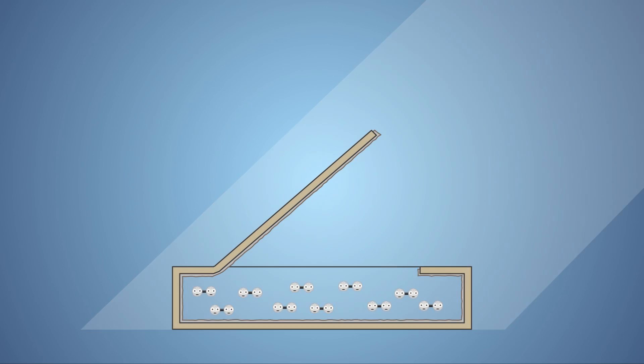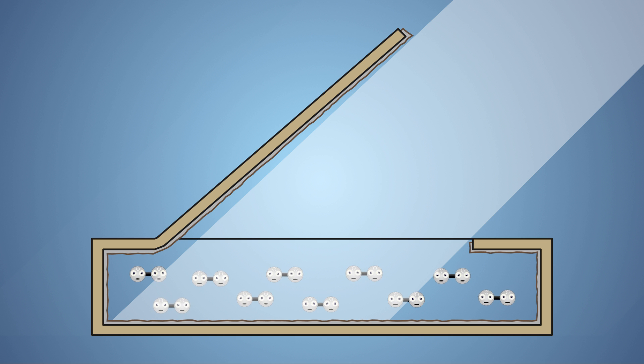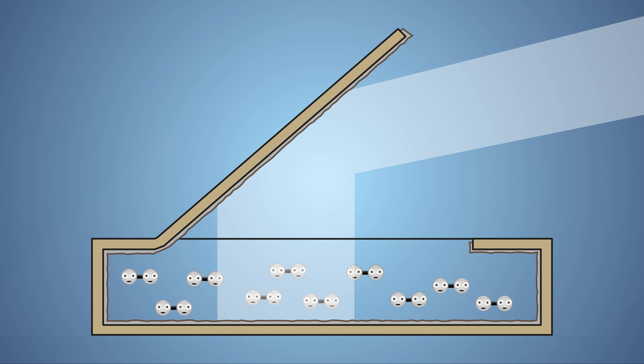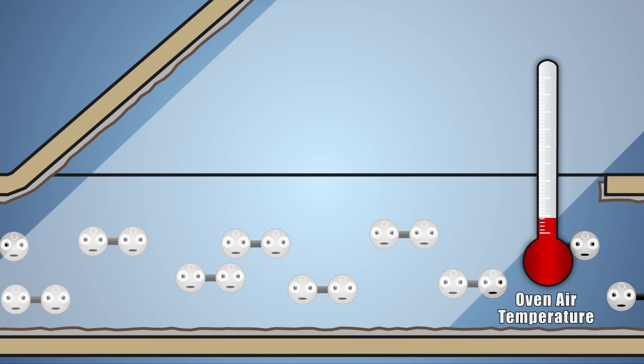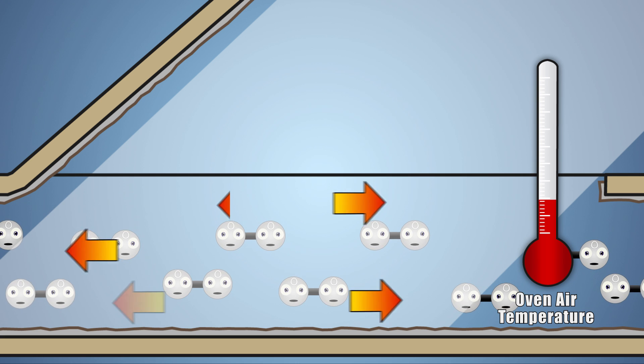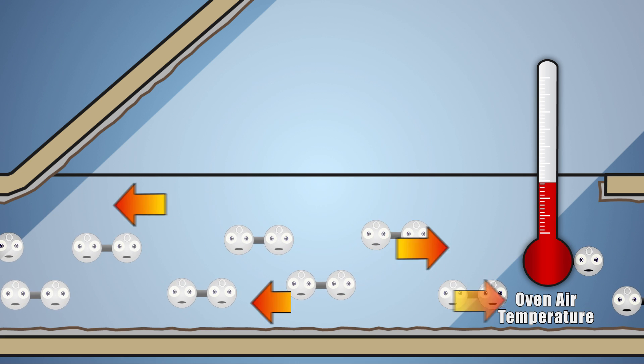it beams down onto our solar oven. The opening in the top of our oven lets light enter the oven, and the angled flap, which is coated with aluminum foil, helps to reflect additional light, which would normally miss the oven's opening, into the oven. When light enters the oven, it transfers energy to the air molecules by a method known as radiation, which converts light into thermal energy, raising the oven's air temperature.